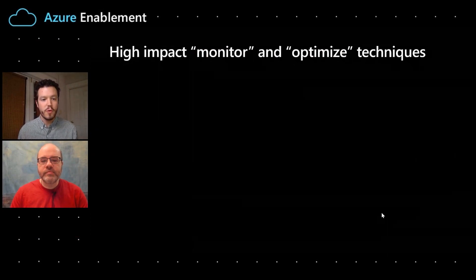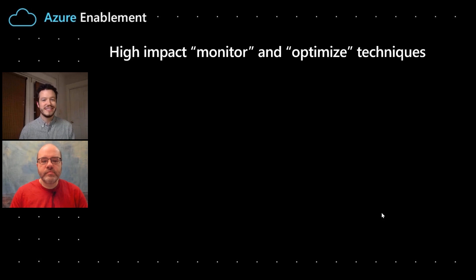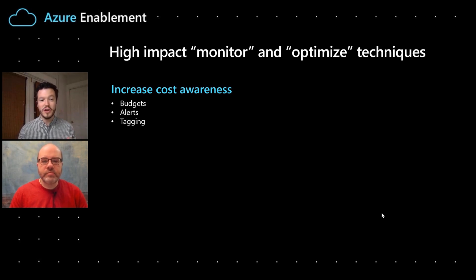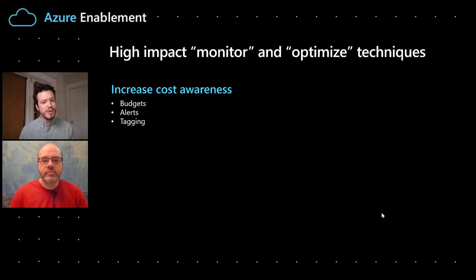There are a lot of high-impact techniques around monitoring and optimizing existing workloads. First, there's the important idea of increasing cost awareness, visibility, and accountability — really getting your arms around what you're spending, why you're spending it, and who's spending it. This means setting up budgets for your workloads assigned to your different teams, setting up alerts against those budgets so you're notified if costs are getting out of control, and also tagging your resources so you know whose resource it is, who it belongs to, what it's for, and how important it is. Are you doing any of those things today?